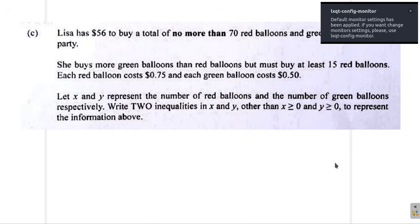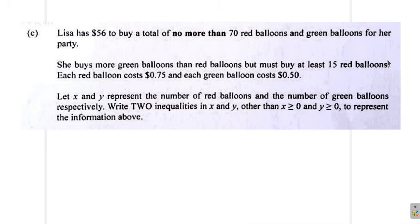Why didn't they just say let R and G represent them? That would be much easier to remember. But anyway, X is red, Y is green balloon.